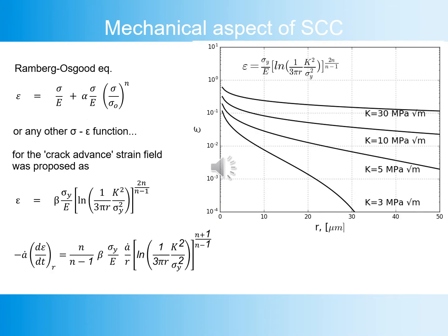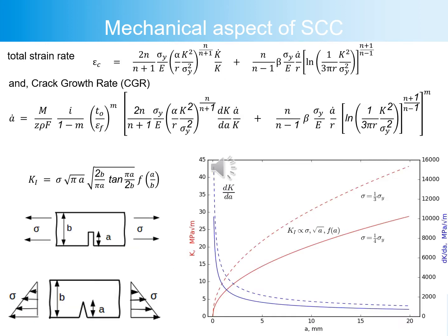The Ramberg-Osgood equation, or any other stress-strain function, is used so that the crack-advance strain field can be defined by the equations given, as illustrated in the figure. Total strain rate is given by the formula combining these components, and finally crack growth rate is expressed through all these parameters as derived in the previous slides.